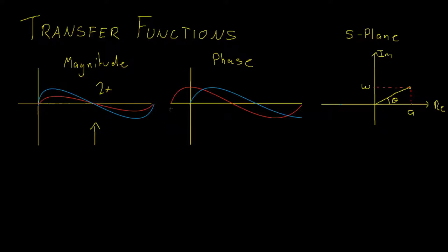For instance, if our red signal was our input signal and our blue signal was our output signal, we would roughly have a magnitude output two times that of the input. In other words, we would have a gain of two.